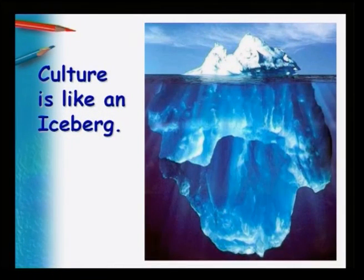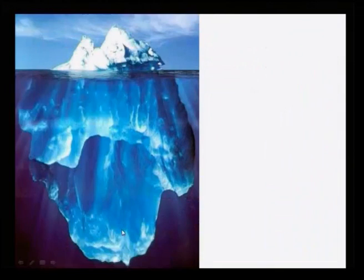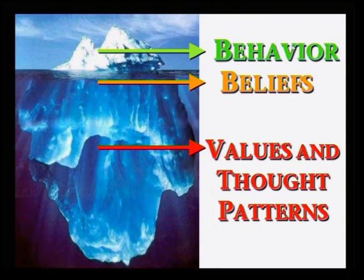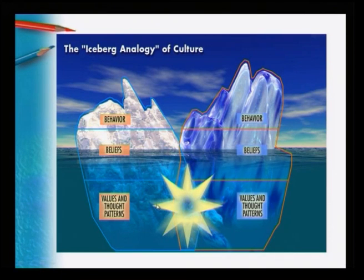Culture itself is like an iceberg — six-sevenths of the iceberg is under the water. Only the topmost part is revealed to you in the form of behavior. The topmost level is behavior, then beliefs, and at the deepest level are values and thought patterns. These cannot be shaken or changed easily — this is what we call the iceberg analogy of culture. When two people come together, behavior is overt, followed by beliefs, and at the bottom are values and thought patterns where the real clash happens, with behavior only superficially expressing it.